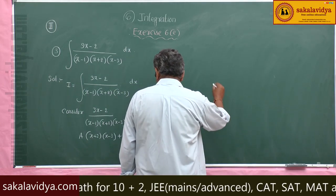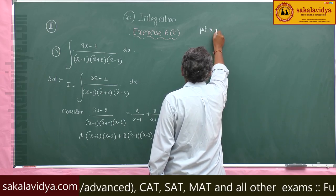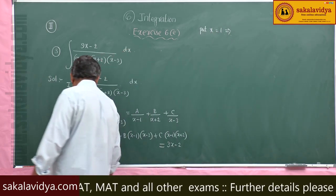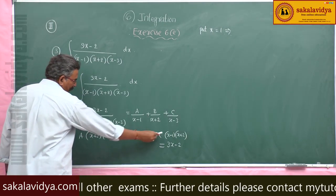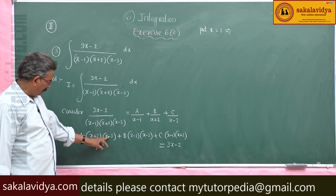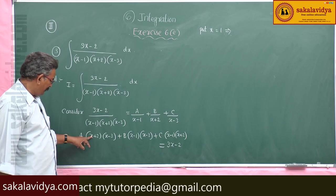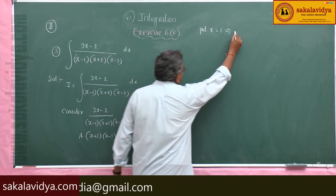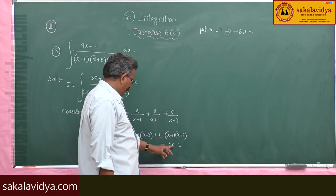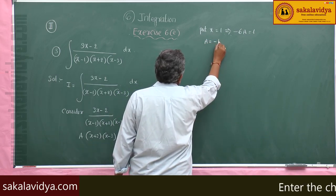Put x equal to 1. If you put x equal to 1, we get A times (1+2)(1-3) equals 3 minus 2, which gives minus 6A equals 1, so A equals minus 1/6.